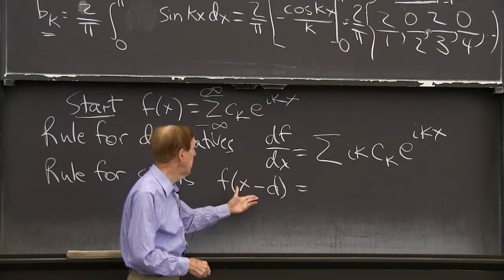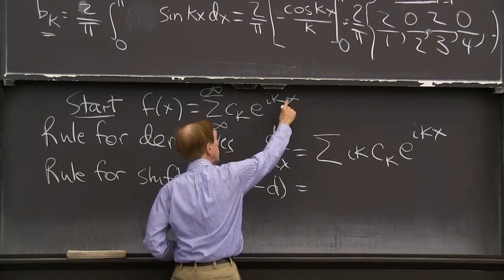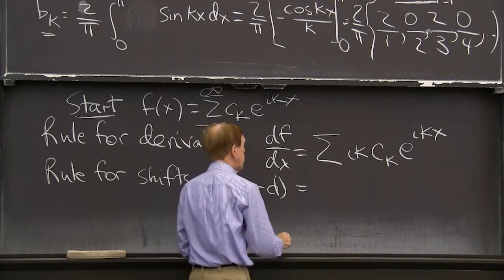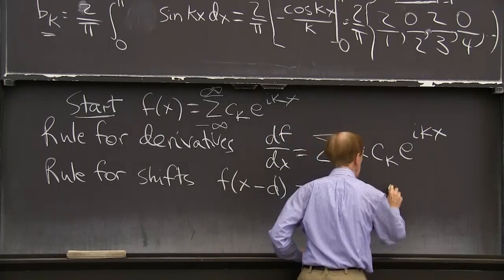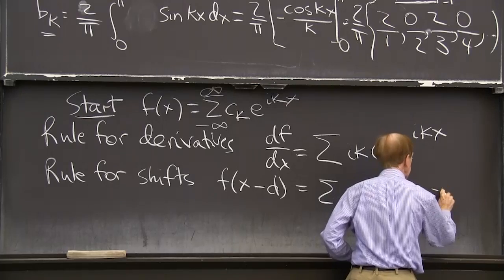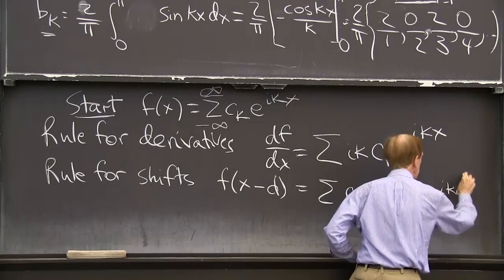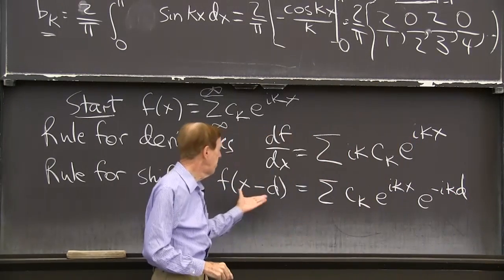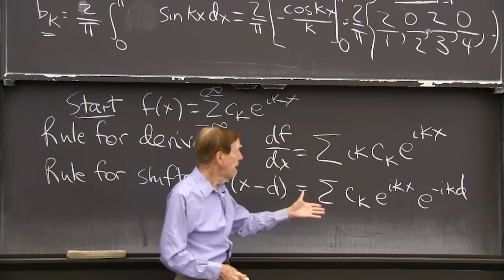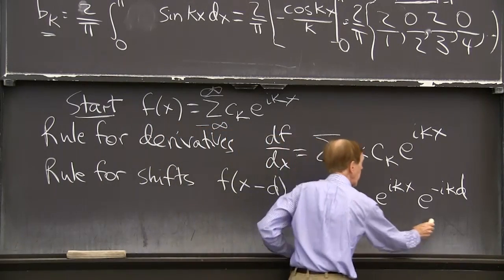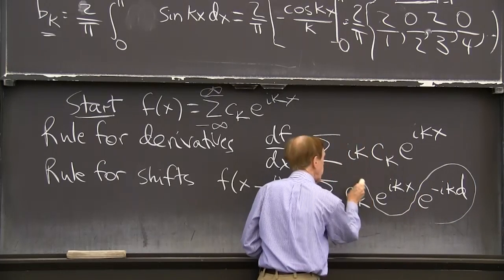And if I do f of x minus d, so I'll change x to x minus d. So I'll see the sum of c_k e to the ikx e to the minus ikd. I've put in x minus d instead of x.